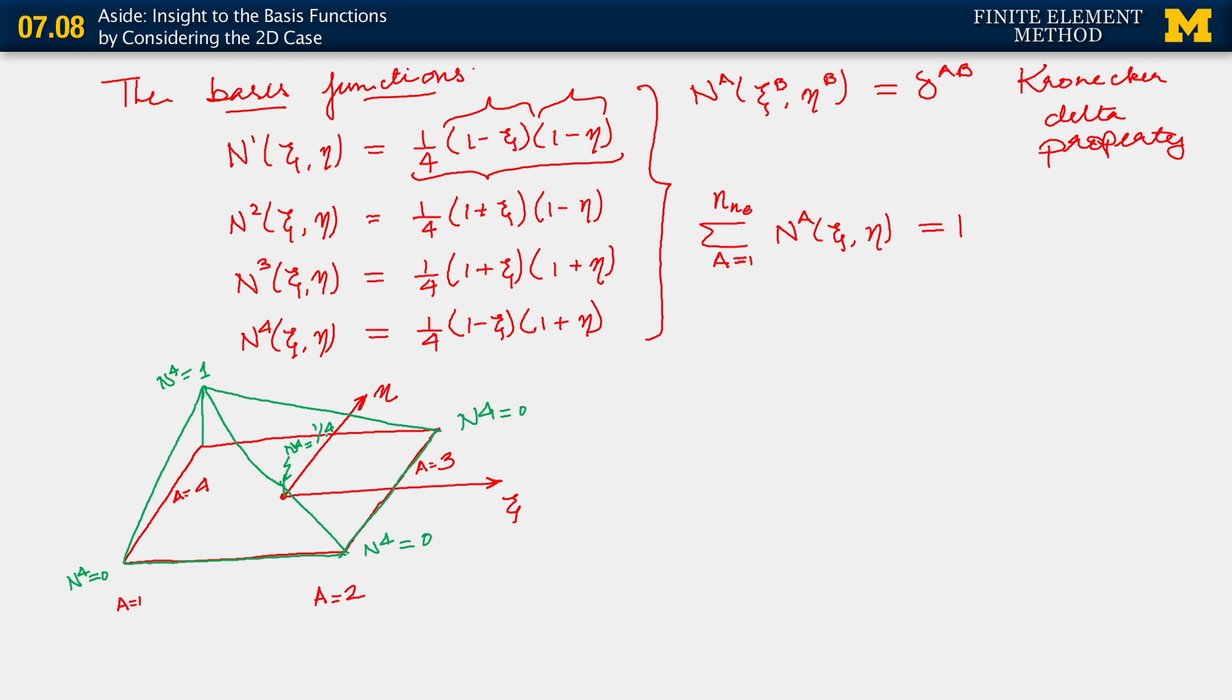So this is what happens with N4. The same sort of thing can be checked with any other basis function with N1, for instance, and it will look similar. It will have this sort of tent-like structure, which obtains a value of one at A equals one, at that node, and goes down bilinearly to zero at each of the other nodes.